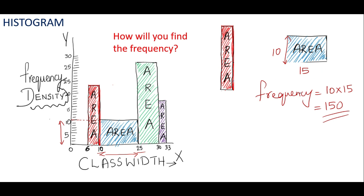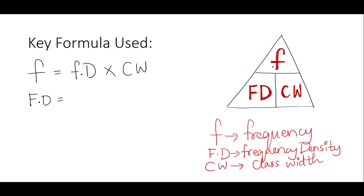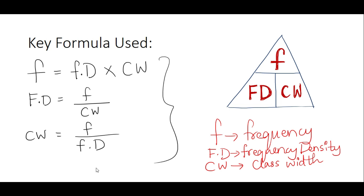To summarize the formulas: Frequency equals frequency density times class width. To find the frequency density, use frequency divided by class width. To find the class width, use frequency divided by frequency density. You can use these three formulas to solve questions and complete graphs.